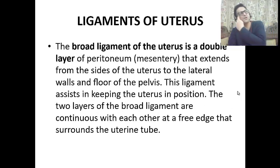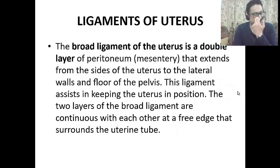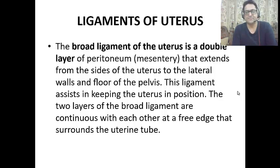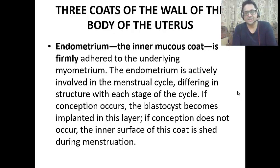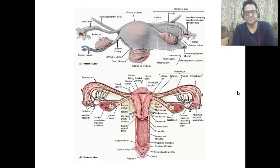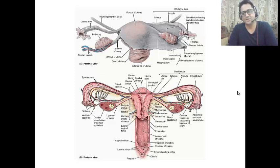The broad ligament of the uterus is a very important structure. It is a double layer of peritoneum — a mesentery — that extends from the sides of the uterus to the lateral wall and floor of the pelvis. Laterally the peritoneum of the broad ligament is prolonged superiorly over the vessels as the suspensory ligament of the ovary. The broad ligament consists of three parts.